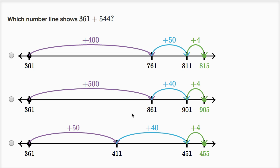So this makes sense. You add 500, you get 861. You add 40, you get to 901, and then you add the four, you get to 905. So definitely go with that choice.